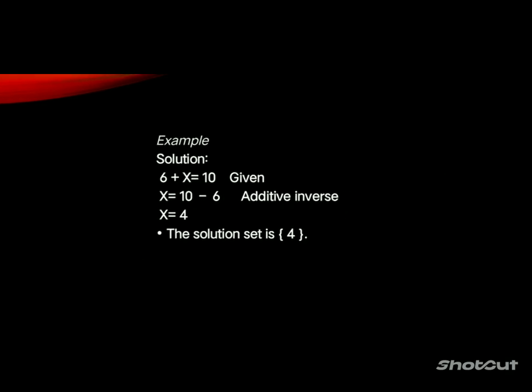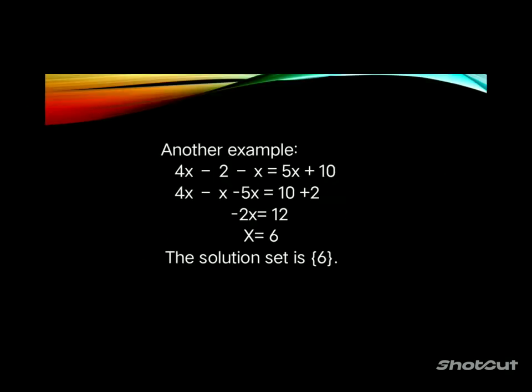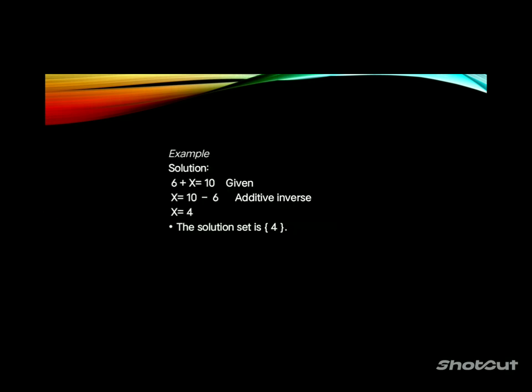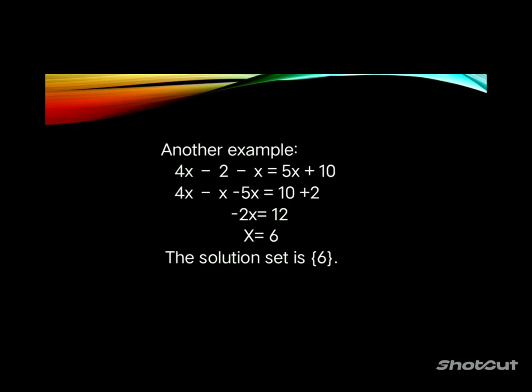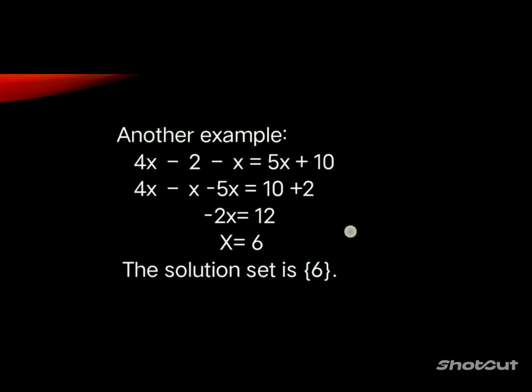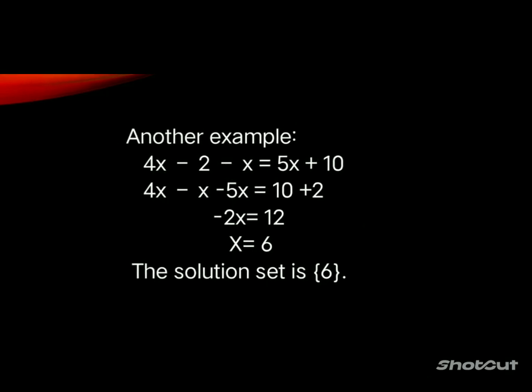Another example: 4x minus 2 minus x equals 5x plus 10. Applying additive inverse: 4x minus x minus 5x equals 10 plus 2, giving negative 2x equals 12, and x equals negative 6. The solution set is {negative 6}.